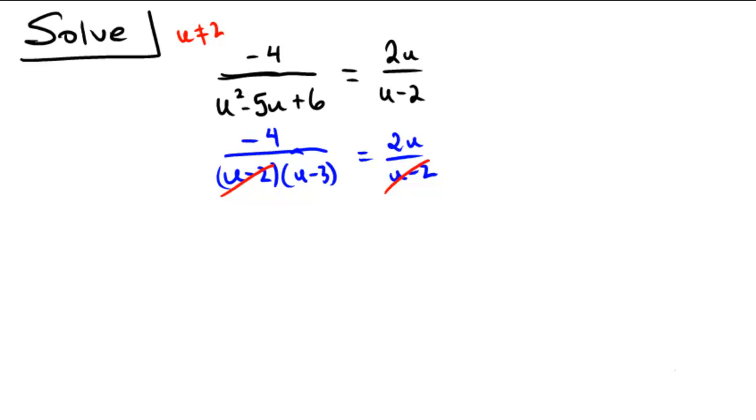So after canceling out the u minus 2, it looks like we have an equation that says negative 4 over u minus 3 equals 2u. We're going to use a cross multiplication type technique. 1 times negative 4 is negative 4. That's on this side. And on this side, we would have 2u multiplied by u minus 3.